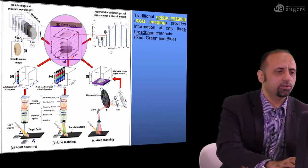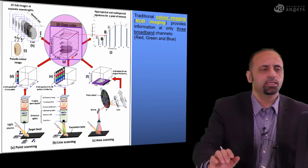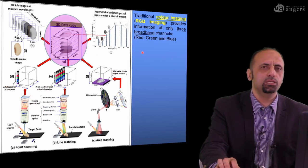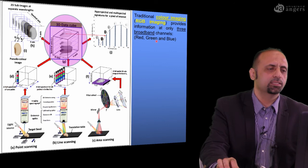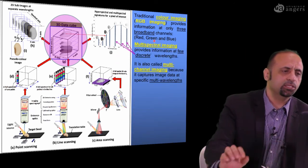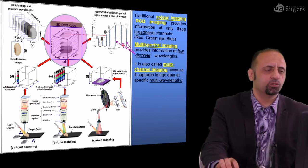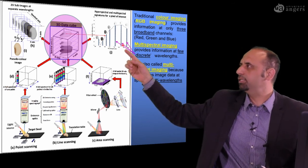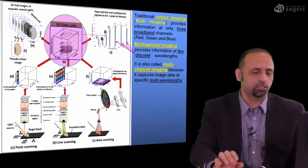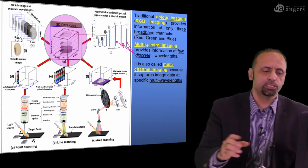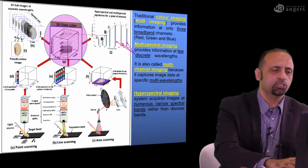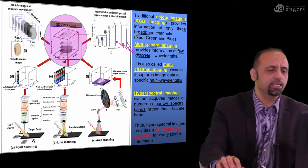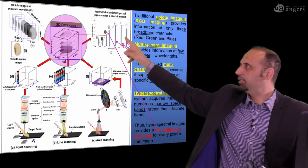To summarize the differences between color imaging, multispectral imaging, and hyperspectral imaging: for color imaging we have images at only three bands — red, green, and blue. In multispectral imaging, we have information from a few discrete wavelengths, perhaps fewer than 20 wavelengths, but we do not have the full spectrum. If you need the full spectrum of your sample, you use hyperspectral imaging, which acquires images at narrow spectral bands and gives you a full spectrum curve at the end.